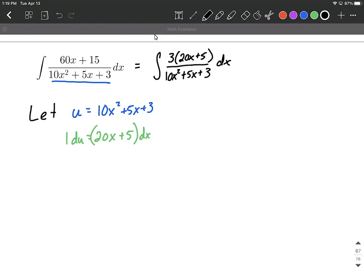From here, what we'd like to do is we'd like to start substituting in. So the entire denominator is going to get replaced with u, and we're going to be able to replace the 20x plus 5 and the dx with 1 du.